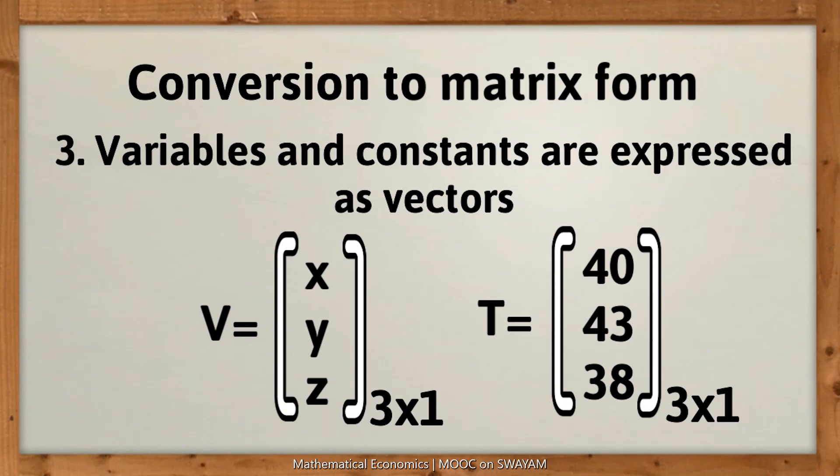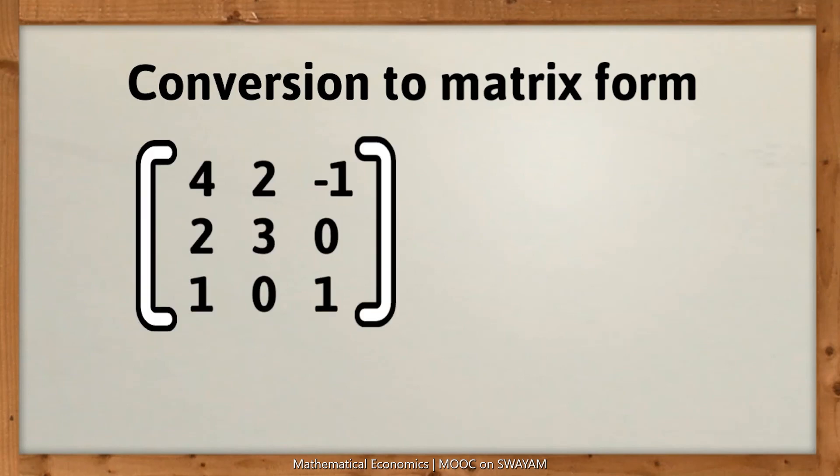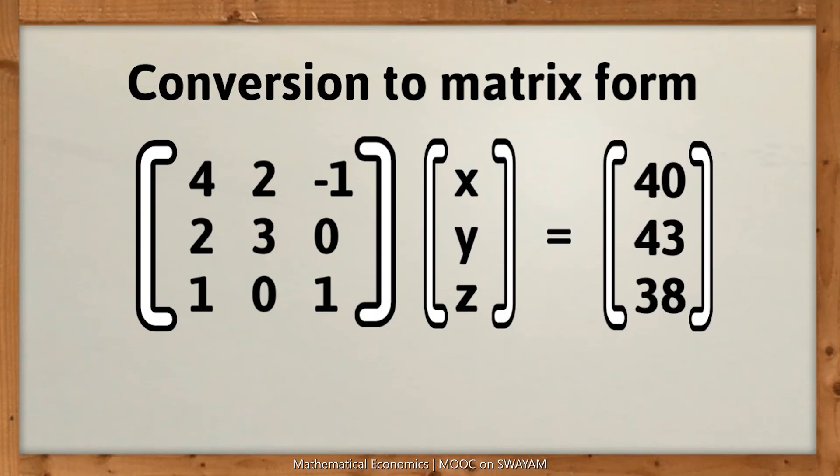Now, the system of three linear equations would look somewhat like this in matrix form. In shorthand, this may be written as ZV is equal to T where Z is a matrix of order 3 by 3, V is a matrix of order 3 by 1 and T is a matrix of order 3 by 1.